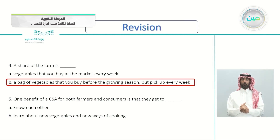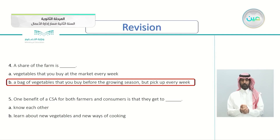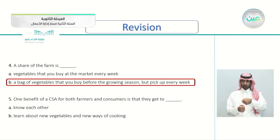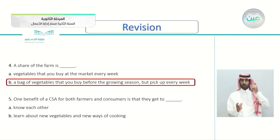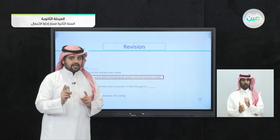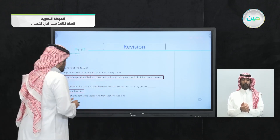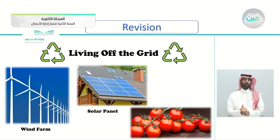Question five: one benefit of a CSA for both farmers and consumers is that they get to — A: know each other, or B: learn about new vegetables and new ways of cooking. Focus on the word 'both' — the farmers and the consumers. The answer is A — they get to know each other. Learning new vegetables is only an advantage for consumers, not both.